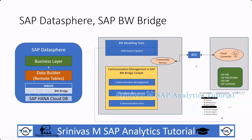BW Bridge is technically based on an ABAP platform in SAP BTP. RFC is used as the protocol for data exchange between on-premise source systems and SAP BW Bridge. Using the cloud connector, data is brought from on-premise to BW Bridge, where it is stored in the cloud environment under the BW Bridge space. Data stored in the BW Bridge space can be consumed in SAP Datasphere by sharing it.